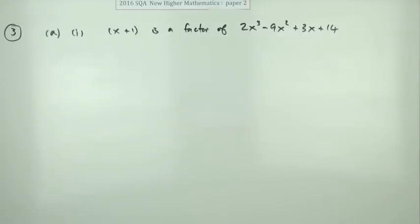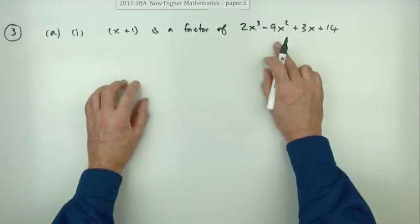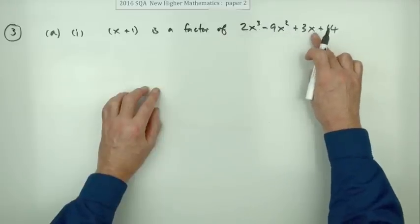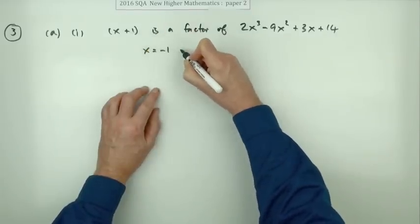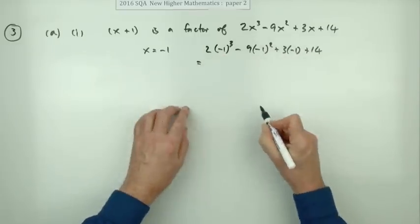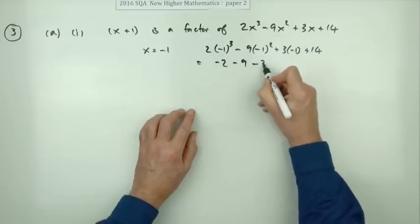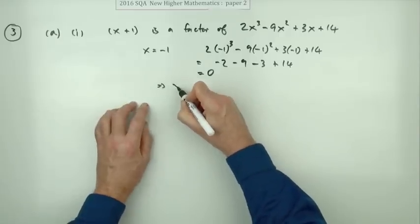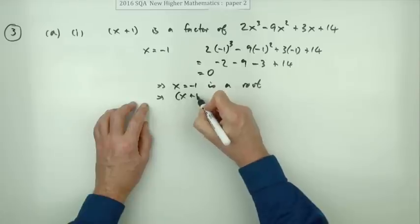There are two basic ways to do that. You could show that x equals negative one is a root by substituting negative one into the expression and showing that it comes to zero. Substituting in gives negative two, negative nine, minus three — so negative 14 plus 14 is zero — which means x equals negative one is a root, and therefore x plus one is a factor.